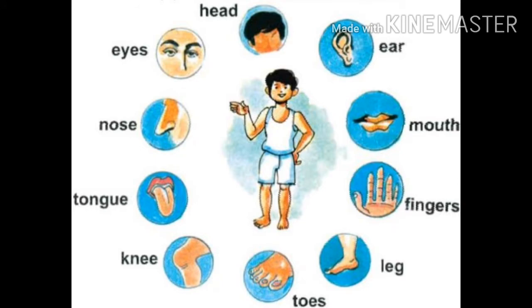In the picture you can see some parts of our human body. They are head, ear, mouth, fingers, leg, toes, knee, tongue, nose and eyes. These are the external body parts which you can see.